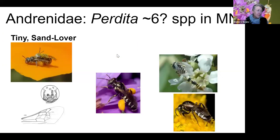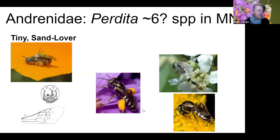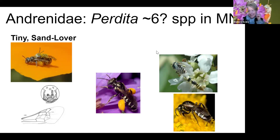Another really fascinating bee group is Perdita — their common name is 'fairy bees.' We have at least six different species in Minnesota. They often nest in sandy soil and are ground nesters. Many are specialist bees. The one pictured here is a Perdita that is a specialist on purple prairie clover and white prairie clover — just those two prairie clovers.